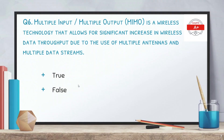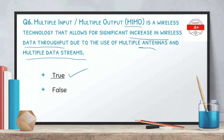Question 6: Multiple input multiple output, MIMO, is a wireless technology that allows for a significant increase in wireless data throughput due to the use of multiple antennas and multiple data streams. The correct option is true. MIMO allows for an increase in data rate using multiple antennas and multiple data streams, and this technology is typically used in the latest Wi-Fi standard — Wi-Fi 6.